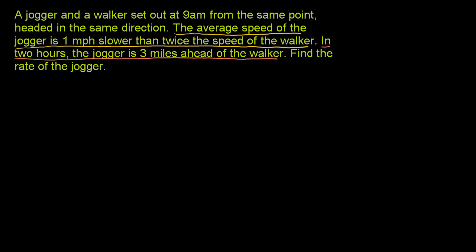Let's write down that first statement in equation form. The average speed of the jogger — let's call that the speed of the jogger — is 1 mile per hour slower than twice the speed of the walker. So that's equal to 2 times the speed of the walker minus 1. It's 1 mile per hour slower than twice the speed of the walker. So that's that first statement.